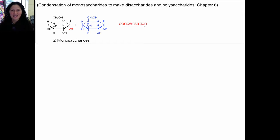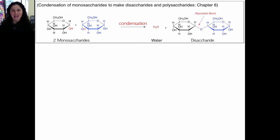You've seen condensation before in chapter 6 and chapter 7. In chapter 6 we talked about monosaccharides condensing to make disaccharides or polysaccharides. This reaction creates water and a glycosidic bond, and its opposite reaction is hydrolysis, when we can take one large unit and break one of the bonds with water.